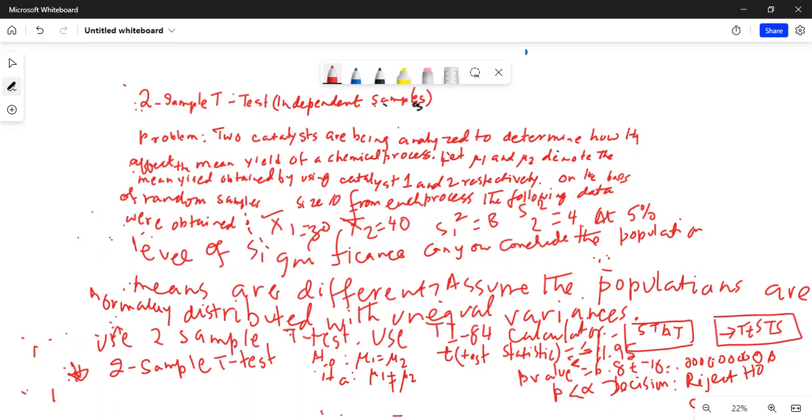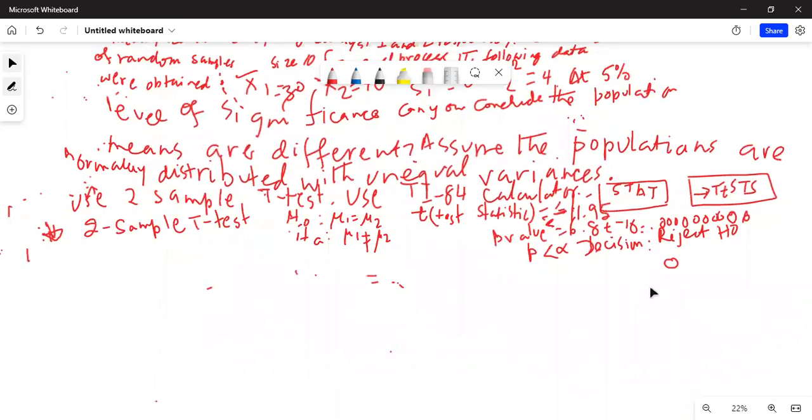So if we reject H0, then our conclusion will be: at alpha equal to 0.05 there is enough evidence to support Ha which states mu1 is not equal to mu2.